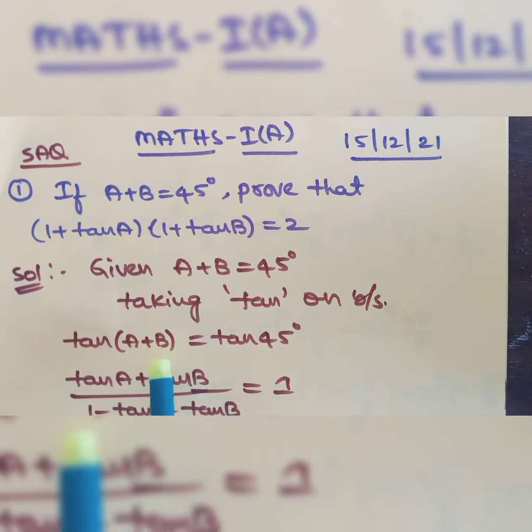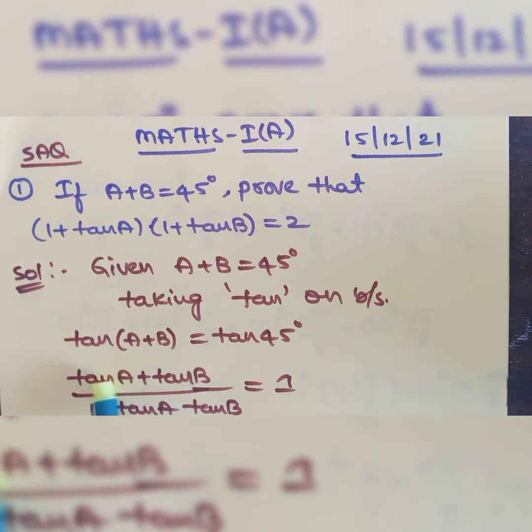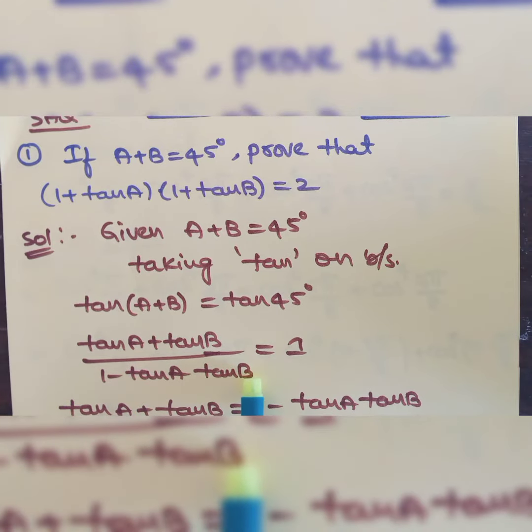What is the formula of tan(A + B)? tan A plus tan B divided by 1 minus tan A into tan B is equal to 1.